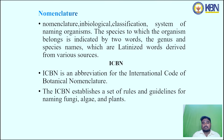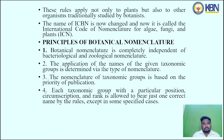Nomenclature is the biological classification system of naming organisms. The species to which an organism belongs is indicated by two words — the genus and species names — which are Latinized words derived from various sources. ICBN is the abbreviation for the International Code of Botanical Nomenclature. The ICBN establishes a set of rules and guidelines for naming fungi, algae and plants.